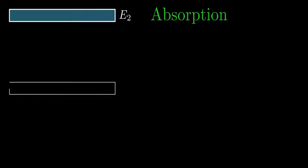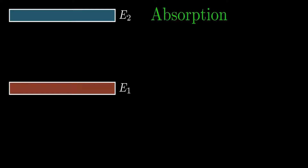Now we discuss the Einstein coefficient of absorption. In absorption, the atom present in the ground state takes up energy Hν and goes to the excited state. Consider two energy levels E1 and E2, where E1 is the ground state and E2 is the excited state. When a photon of energy Hν is incident, the atom in the ground state absorbs it and moves to the excited state E2. This process is called absorption.